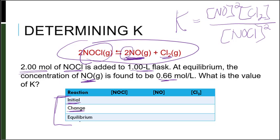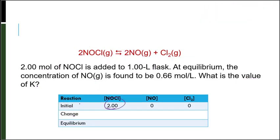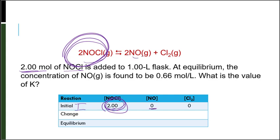Now we need to draw an ICE table showing initial, change, and equilibrium concentrations. When plugging everything into K, all values must be equilibrium values. We're told we have 2 moles of NOCl in 1 liter, so 2 divided by 1 is 2 moles per liter — that's our initial concentration for NOCl. That's the only reactant. I have no products formed initially, so I draw a line separating reactants from products: 2 moles per liter initially, and no products.